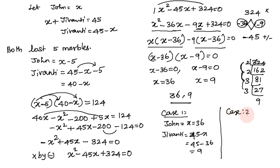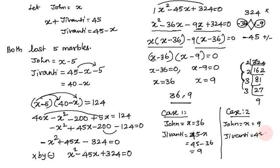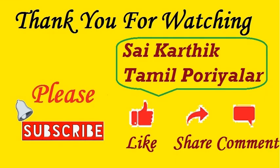Case 2: if John has x equals 9 marbles, then Jivanti has 45 minus 9 equals 36 marbles. So John has 9 and Jivanti has 36. Both cases are valid answers. Thank you.